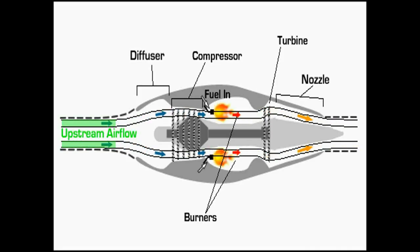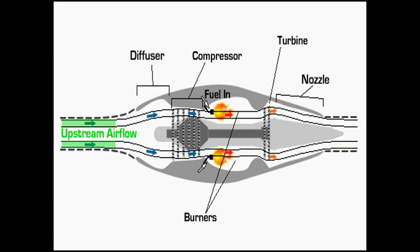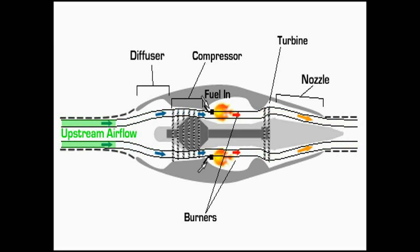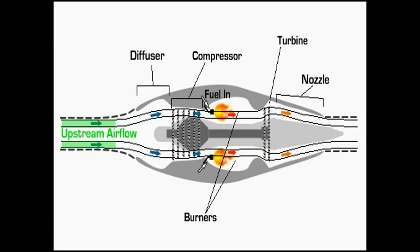Now we will show the main stages and parts of a jet engine and explain their main functions. The first stage of a turbojet engine is upstream airflow. From the point of view of the jet engine, the upstream fluid is approaching at the speed of the vehicle.